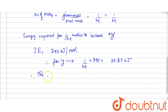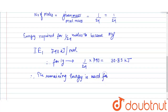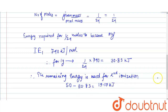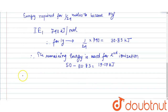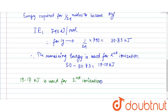Therefore, the remaining energy is used for the second ionization enthalpy. The remaining energy is 50 − 30.83 = 19.17 kilojoules. So 19.17 kJ is used for the second ionization of magnesium.